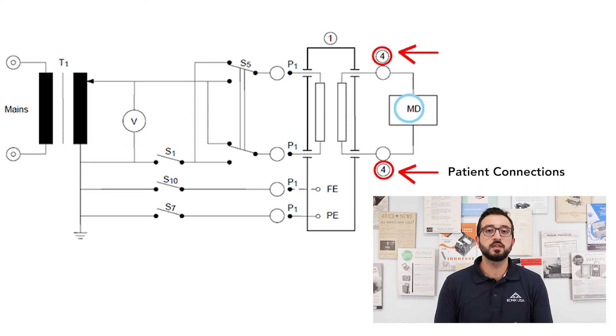In the second example, we will take a look at how leakage current can be measured between two patient leads or patient connections, or in other words, patient auxiliary current. In this case, the measuring device circuit is placed between two different patient connections to ensure that it measures the current that can flow between these two patient connections. Once again, we will simulate this under the fault conditions that we talked about, and the device shall be powered on at 110% of the rated voltage.